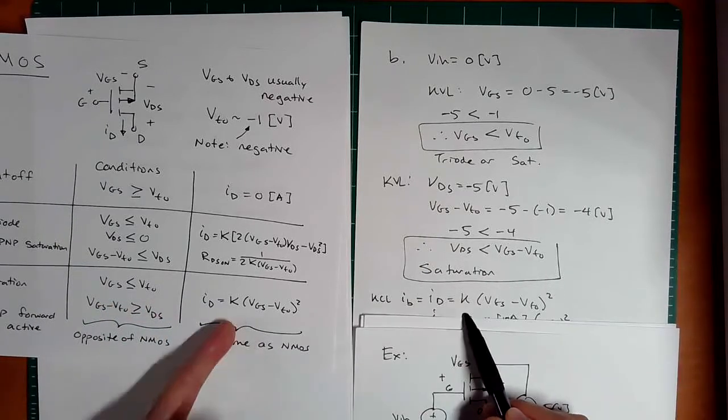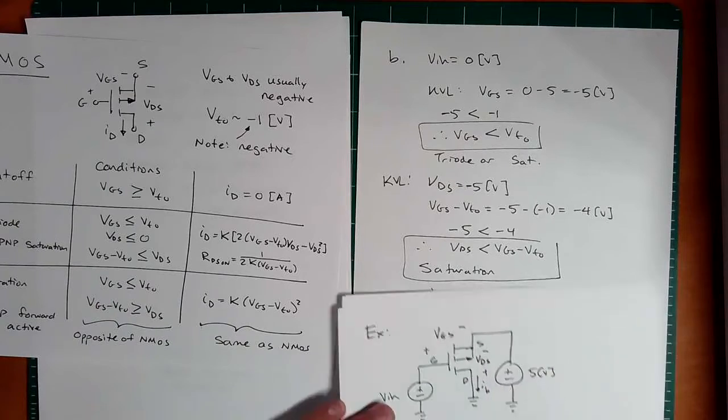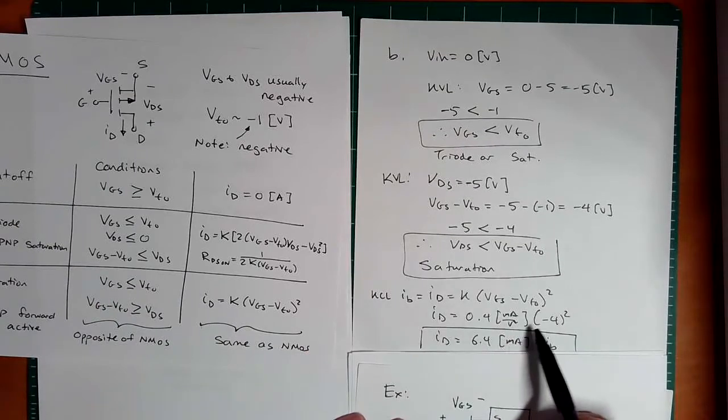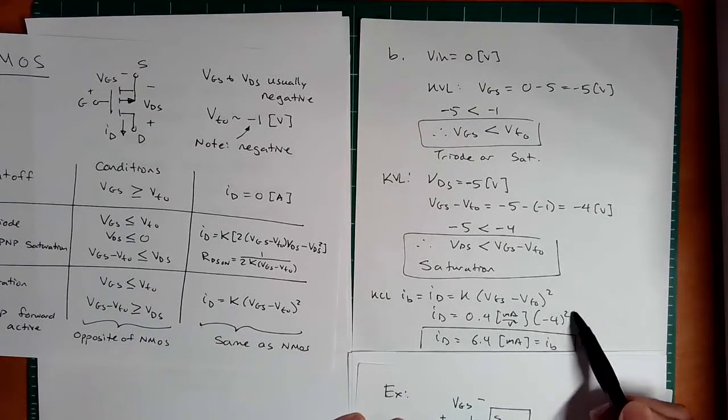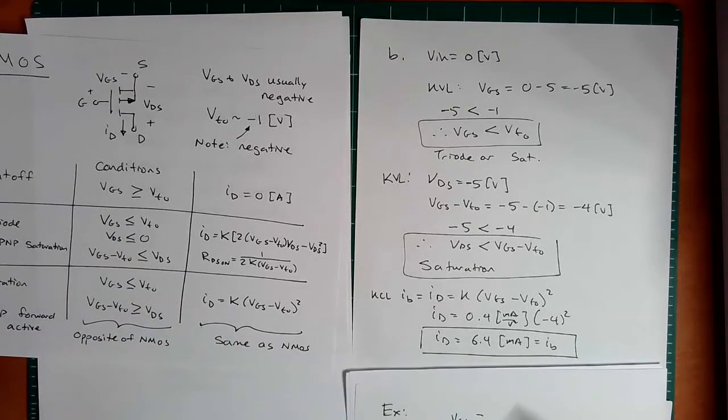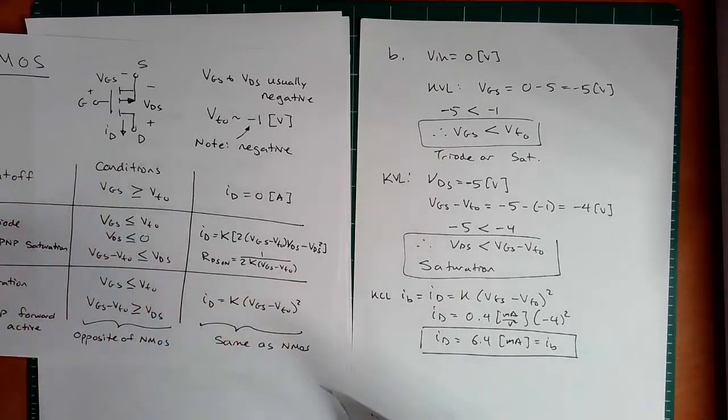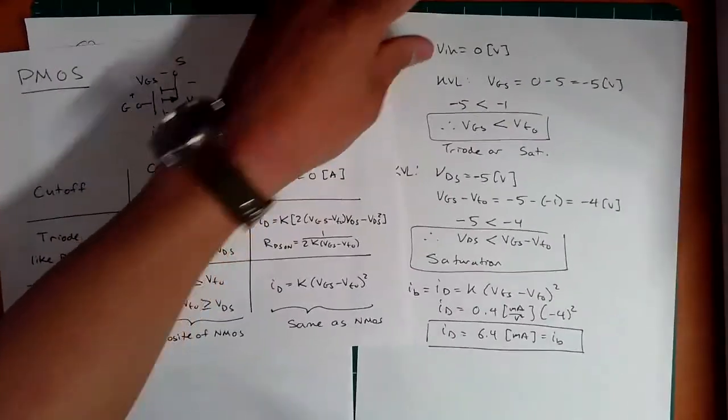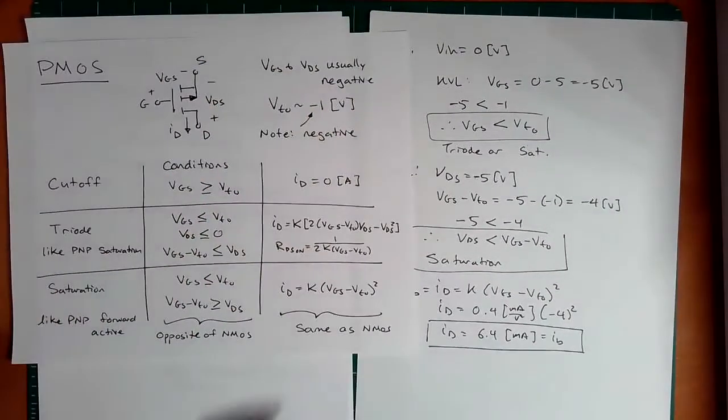Now that we're in saturation, we apply the equation. Put 0.4 here, milliamps per volt squared times this value, negative four squared, we get 6.4 milliamps, which is the drain current or IB. Pretty straightforward, not too bad. You just use this table. And hopefully this is matching your intuition. Well, I hope this lecture was informative and helped you understand and be able to utilize these equations for NMOS and PMOS. All right, have a great day.